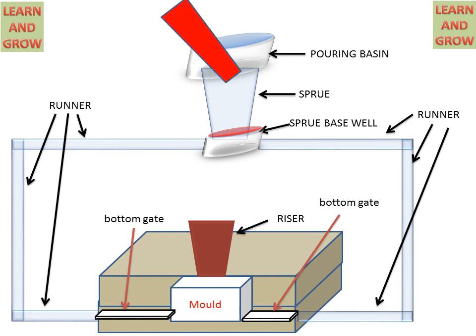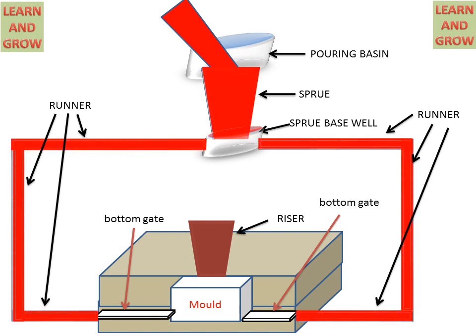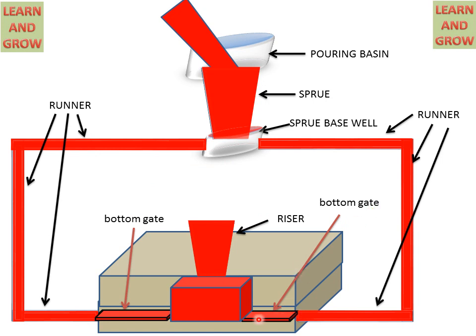Molten metal comes from the pouring basin, travels through the runners, and enters through the bottom gate to fill the mold cavity. Then it fills the riser. This system is called the bottom gate system because the gate is at the bottom of the cavity.